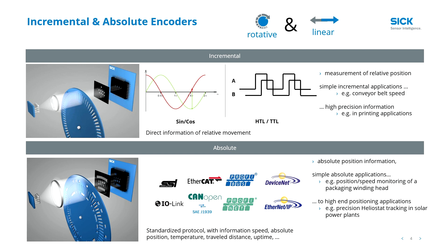Absolute position information can be used in simple applications, such as positioning or speed monitoring of a packaging winding head, or in very high-end applications like the precision heliostat tracking in solar power plants. To sum up, SIG measures motion — absolute and incremental.